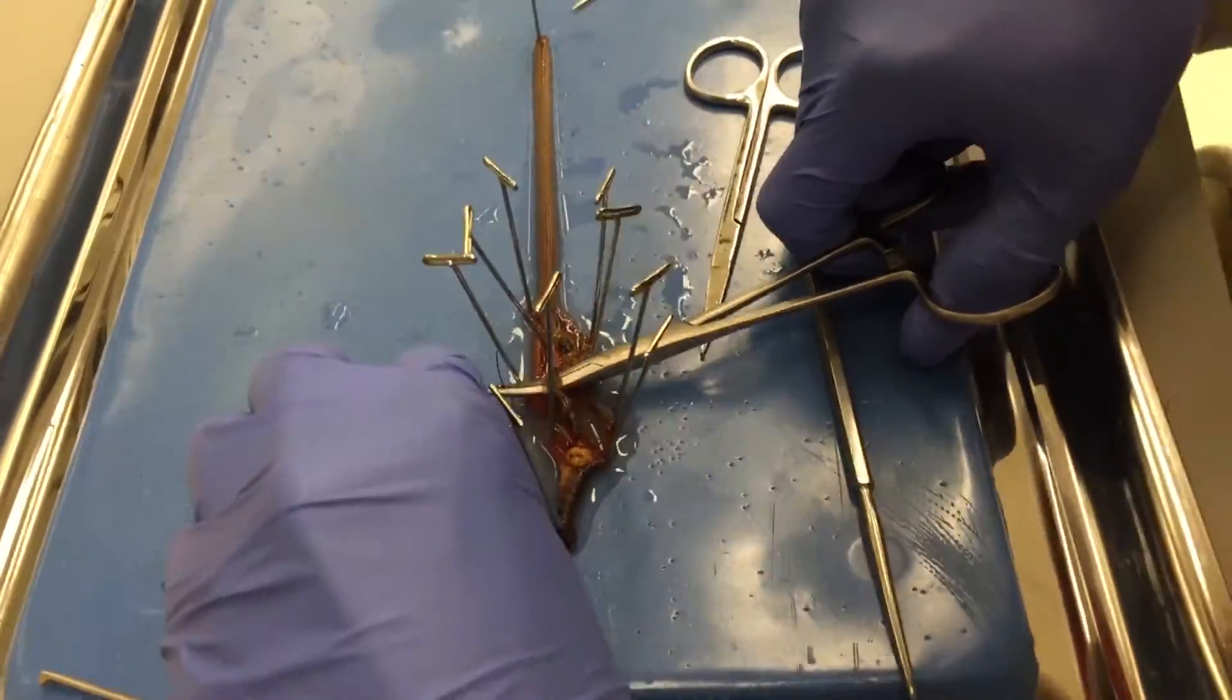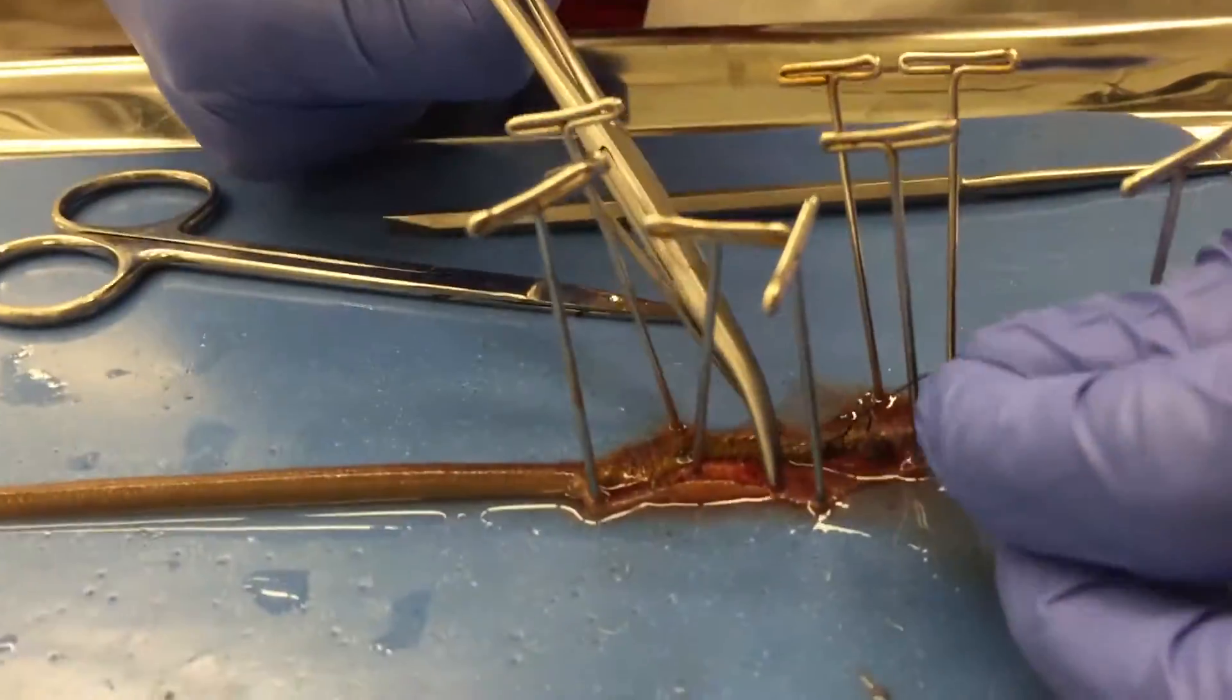Using the hemostat, take the suturing wire and tie it around both sides of the crop and gizzard.